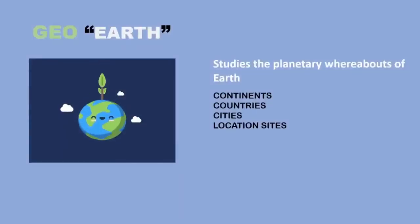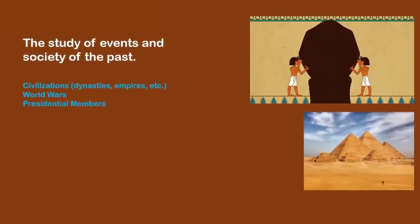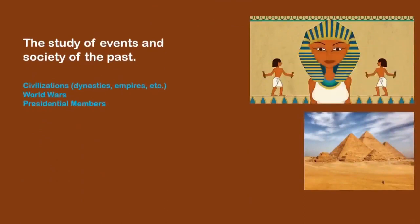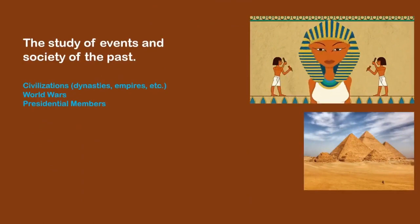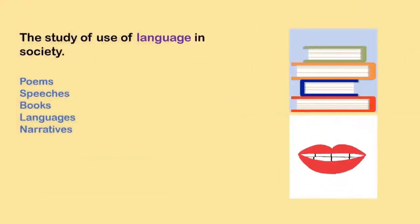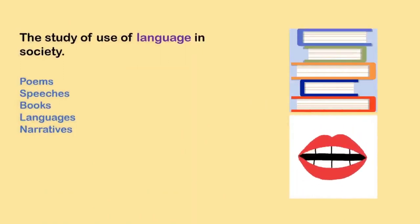Third, geography — it is derived from the word 'geo' meaning earth. It studies the planetary whereabouts of earth, whether continents, countries, cities, or location sites. Next, history — it is the study of events and the society of the past, whether civilizations, world wars, or presidential members. Fifth, linguistics — it is the study of the use of language in society, just like poems, speeches, books, languages, and narratives.